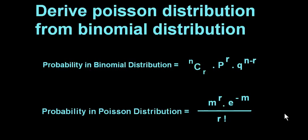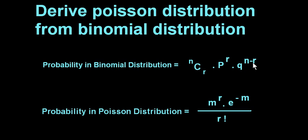Hey friends, it's me Vinod and today I will show how the Poisson distribution is derived from the binomial distribution. The probability in a binomial distribution and its formula is n combination r multiplied with the probability of r and multiplied with the probability of n minus r. The probability of the Poisson distribution is m power r times e to the minus m divided by r factorial.